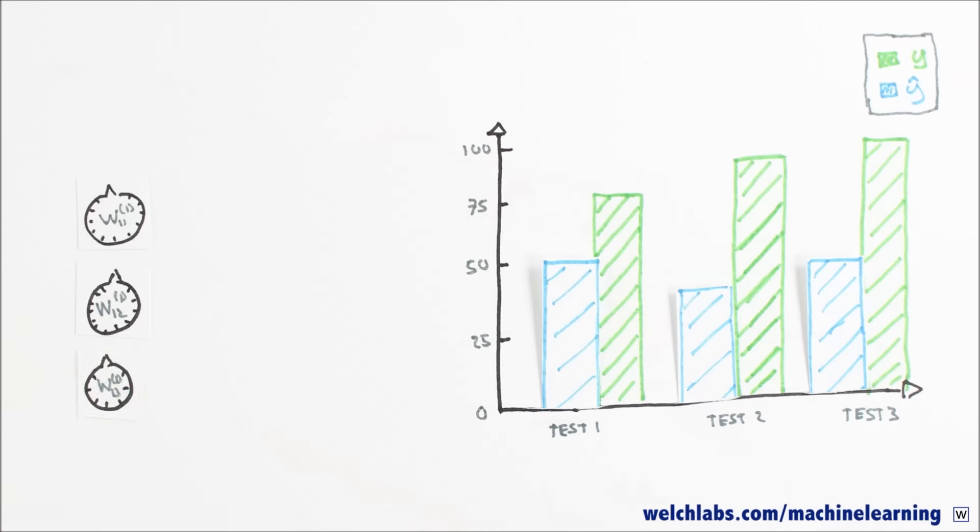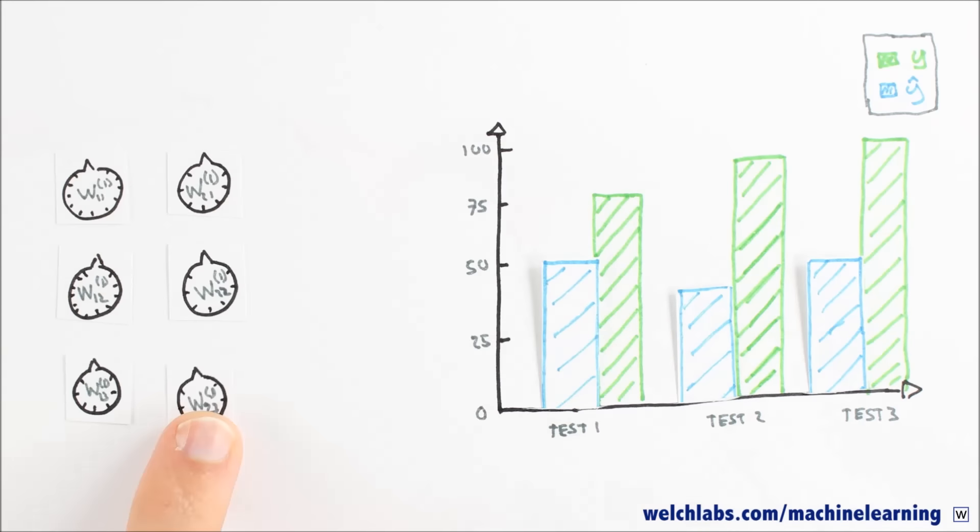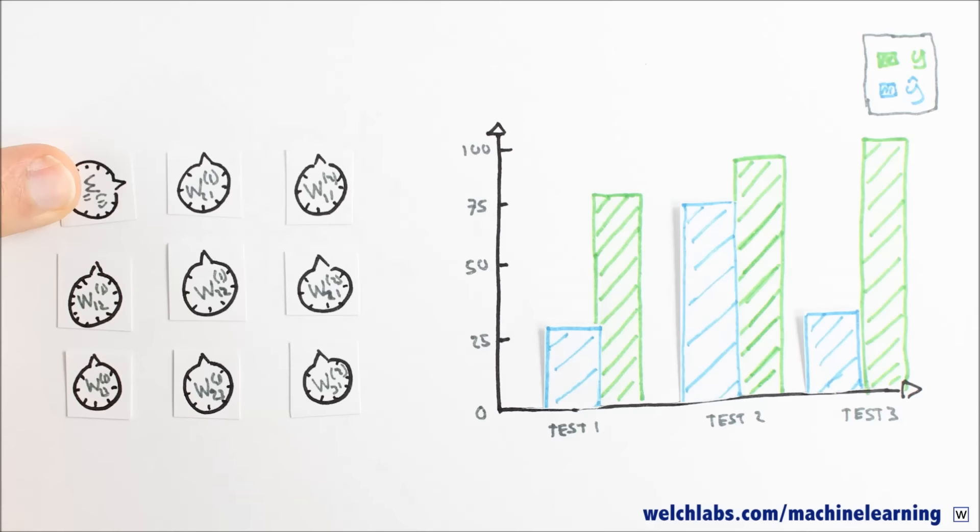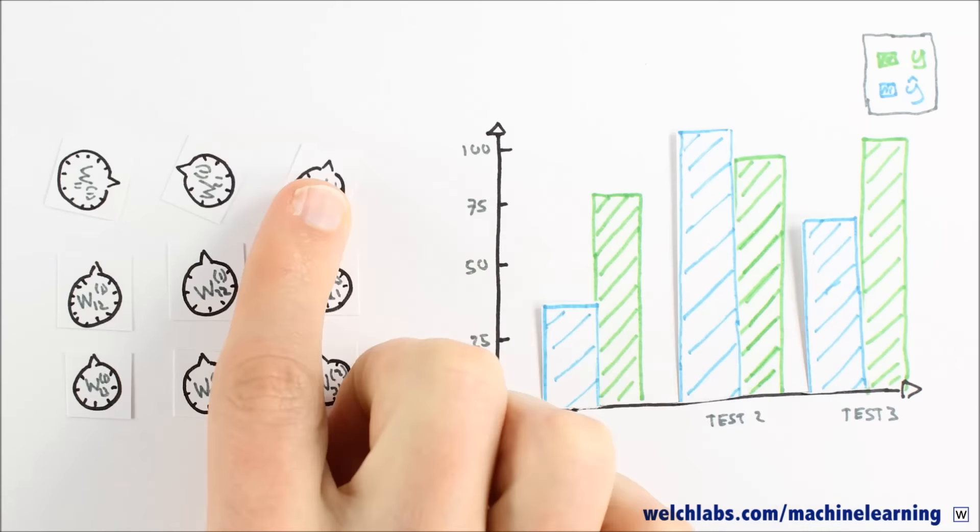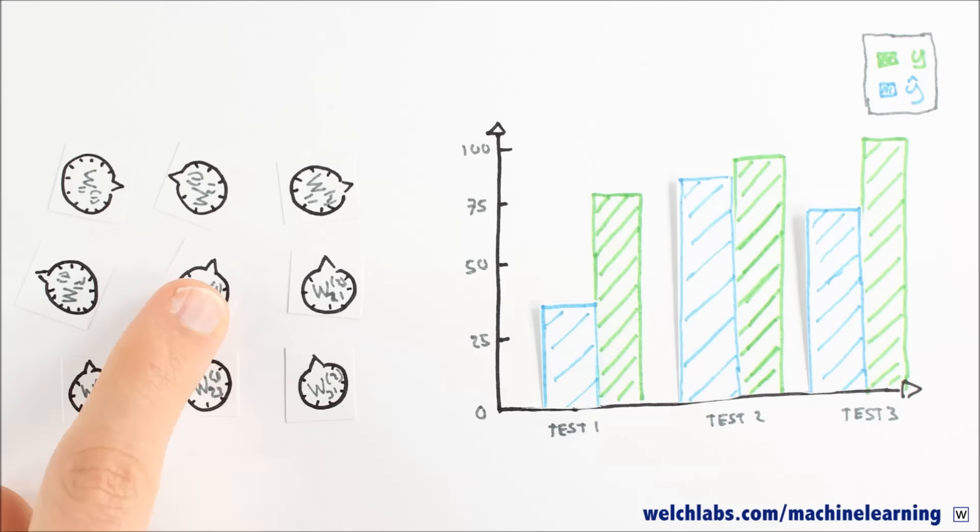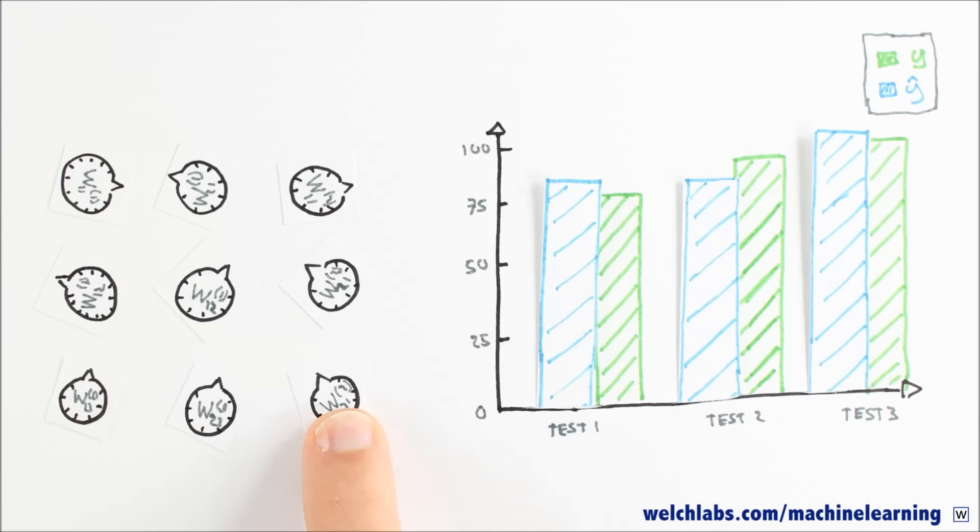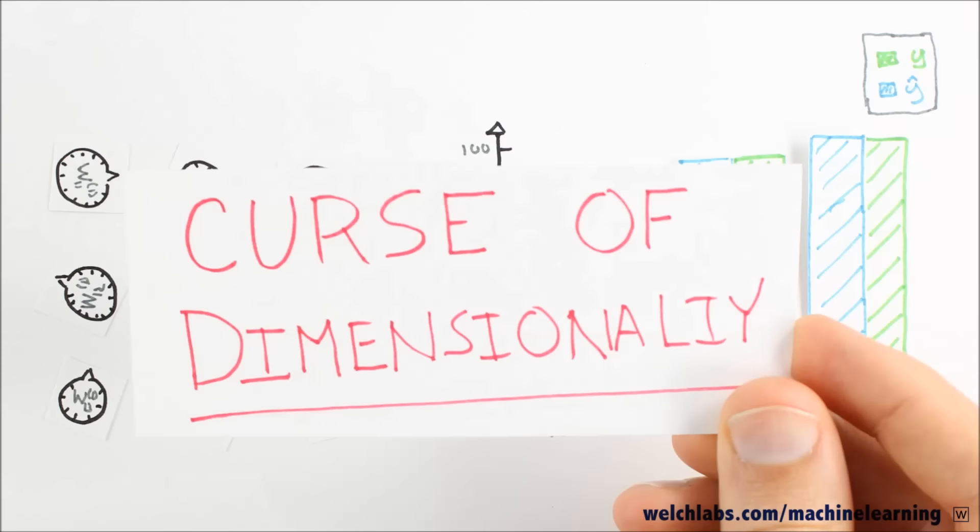Conceptually this is a pretty simple concept. We have a collection of nine individual weights, and we're saying that there is some combination of W's that will make our cost, J, as small as possible. When I first saw this problem in machine learning I thought, I'll just try all the weights until I find the best one. After all, I have a computer.